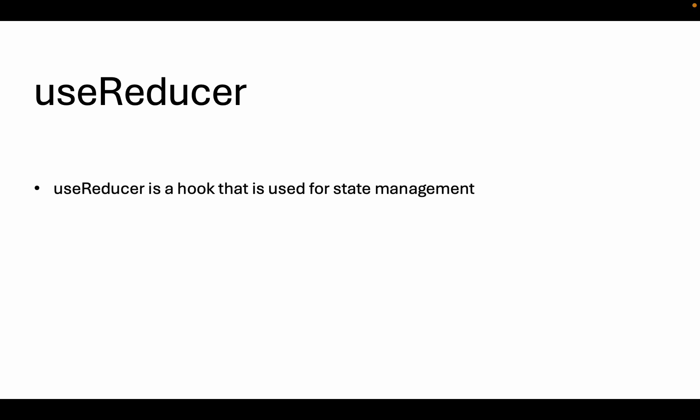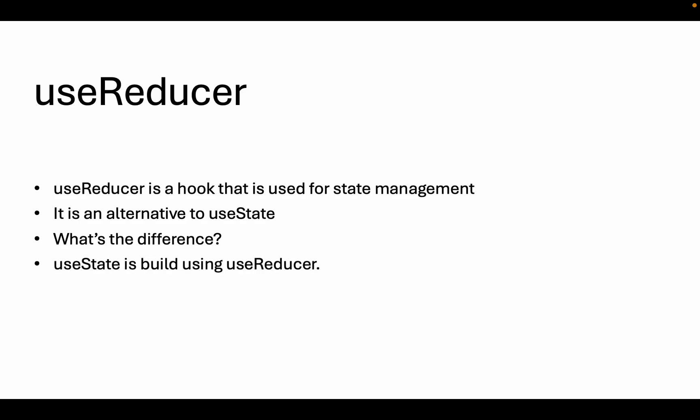useReducer hook is a hook that is used for state management. Now I know the question coming in your mind is that we already have the useState hook for state management — and you are right. useReducer is actually an alternative to useState hook. The difference between them is that useReducer is a more primitive hook than useState. In fact, useState hook is actually implemented on top of useReducer hook.